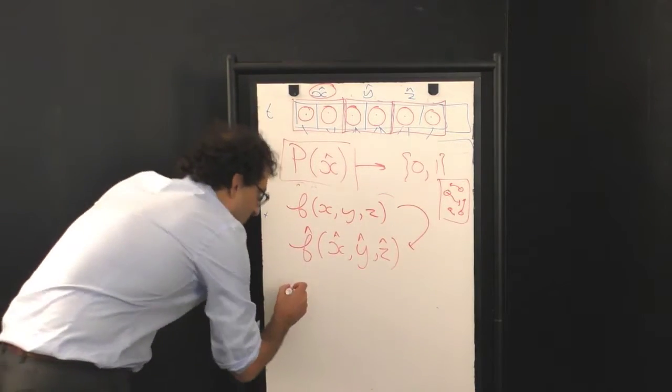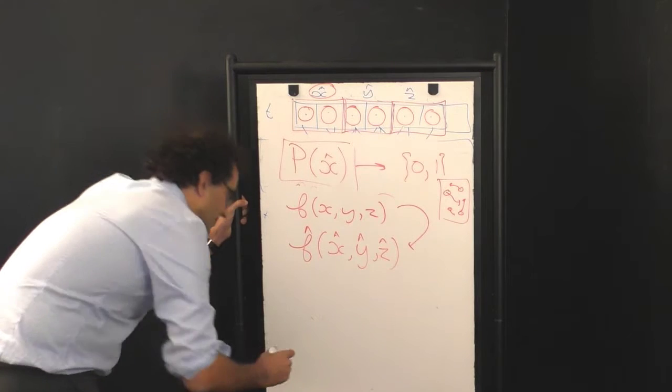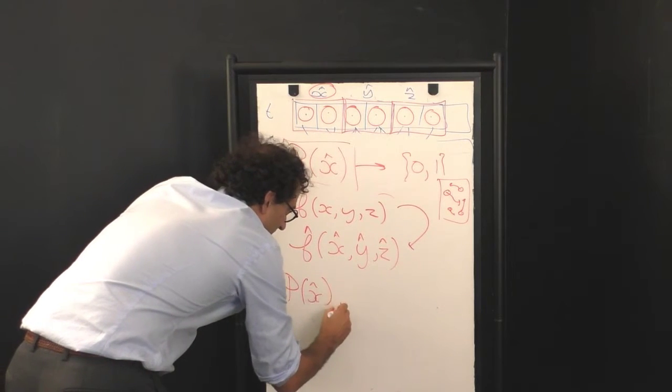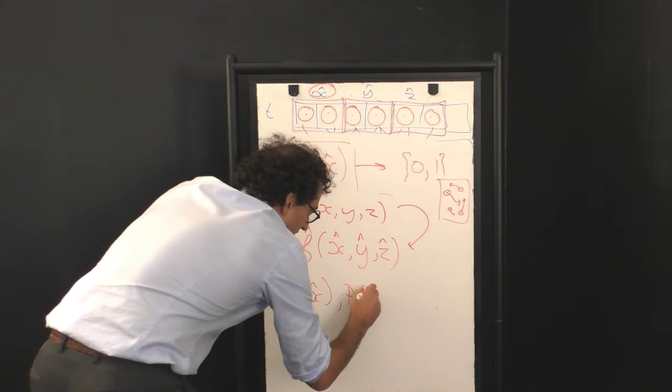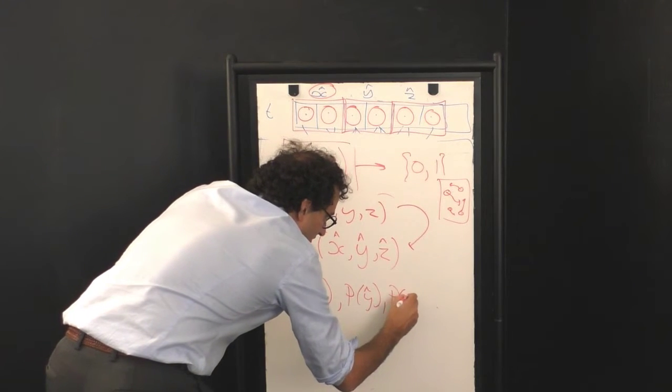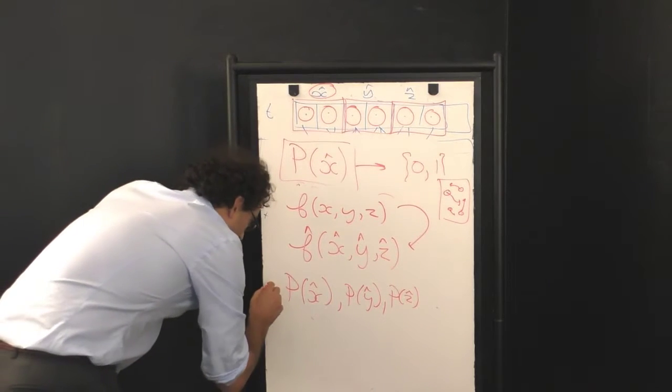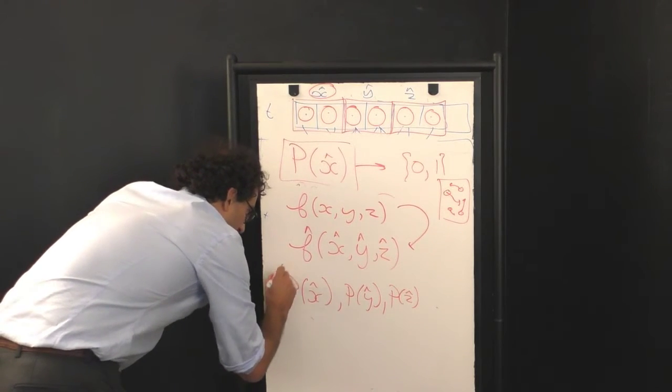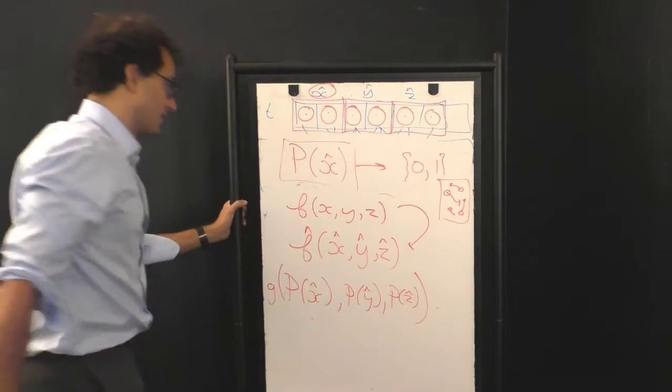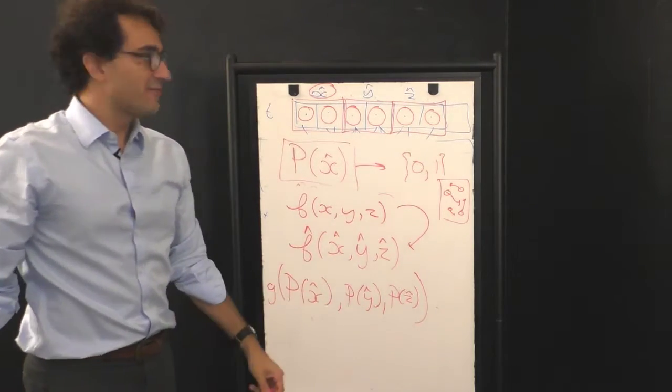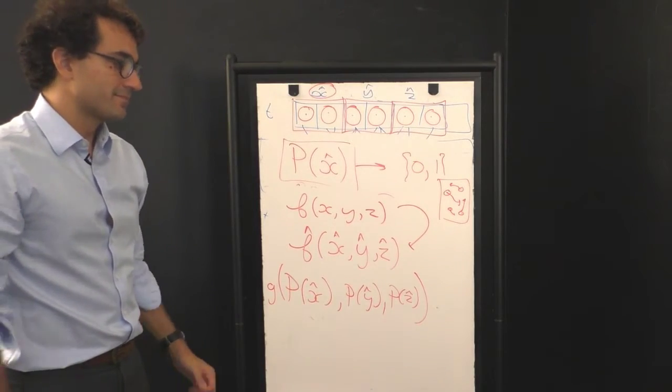But now we have the projection operator. And so we can write something like this. We can project down the input supercells. We can coarse-grain the spatial state of the system. And then we can talk about the function g that evolves these coarse-grain variables forward in time.